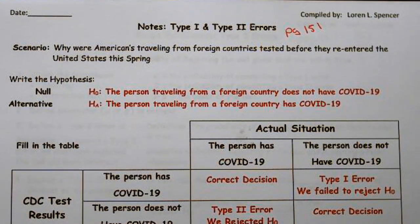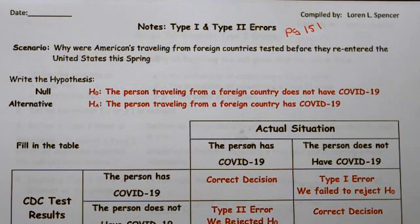Well, the obvious answer is we didn't want them spreading COVID around the United States if they had it. So we're testing to determine whether we need to quarantine or hospitalize someone because they have the coronavirus.